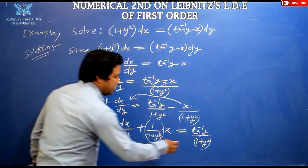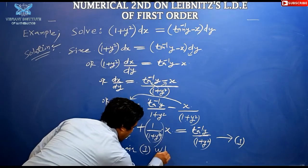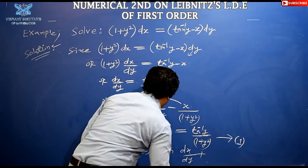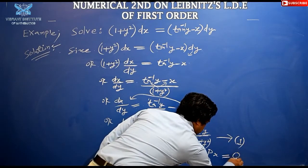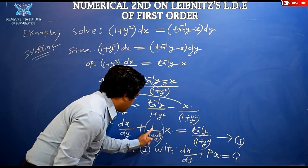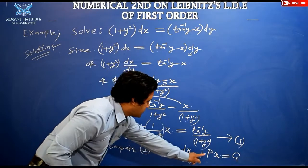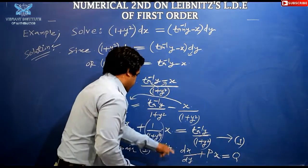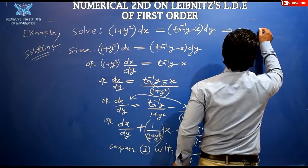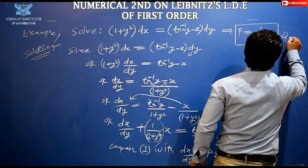Now I compare this with the standard form dx/dy + P·x = Q. Comparing, I identify P = 1/(1 + y²). This is the first important box.